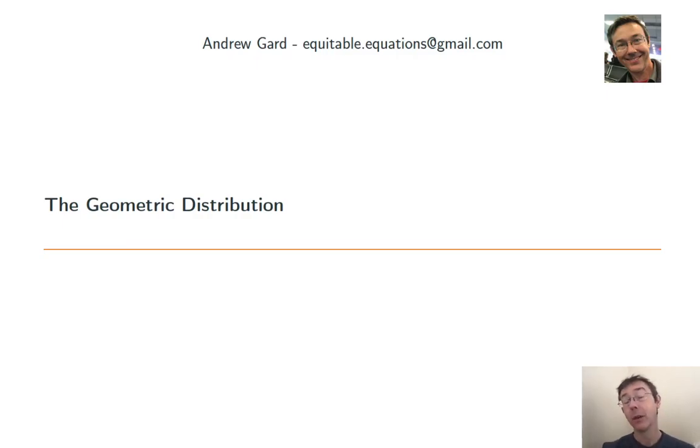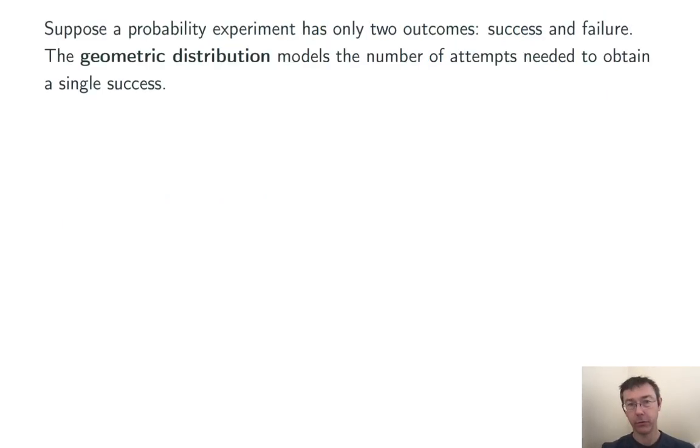Hey everybody, today we're talking about the geometric distribution. Suppose we have a probability experiment that only has two outcomes, success and failure, like maybe flipping a coin.